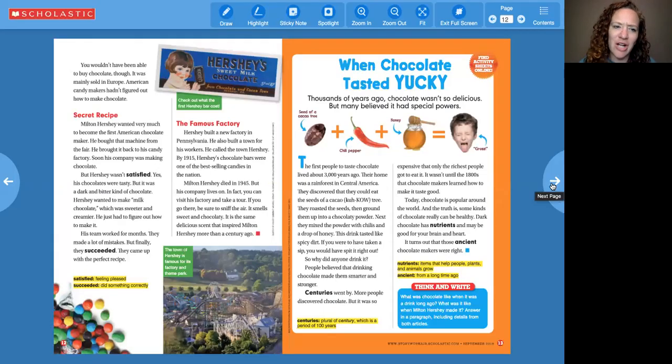Let's keep going. You wouldn't have been able to buy chocolate though. It was mainly sold in Europe. American candy makers hadn't figured out how to make chocolate. Secret recipe. Milton Hershey wanted very much to become the first American chocolate maker. He bought that machine from the fair. He brought it back to his candy factory. Soon his company was making chocolate, but Hershey wasn't satisfied. Let's look. That means feeling pleased. Hershey wasn't feeling pleased. Yes, his chocolates were tasty, but it was a dark and bitter kind of chocolate. Hershey wanted to make milk chocolate, which was sweeter and creamier. He just had to figure out how to make it. His team worked for months. They made a lot of mistakes, but finally they succeeded. They came up with the perfect recipe.